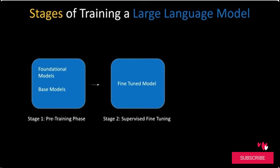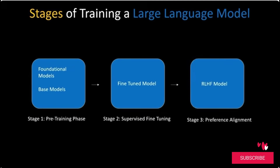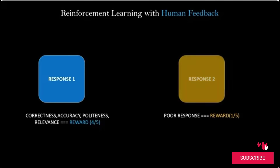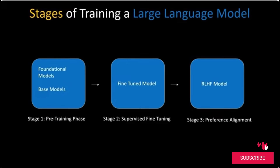Some models undergo an additional step of training called preference alignment. The key idea is aligning the model's responses with human preferences. In this phase, a reward model is introduced. The LLM receives a higher reward for generating useful, aligned responses, and a lower reward for poor responses. Over time, the model learns what kind of responses humans prefer and adjusts accordingly. This completes the common training phases of an LLM before it is deployed for production.